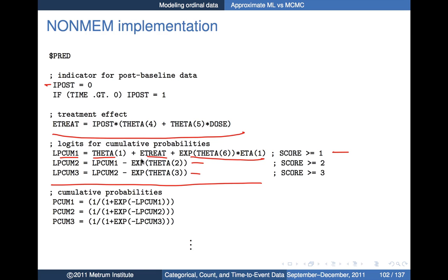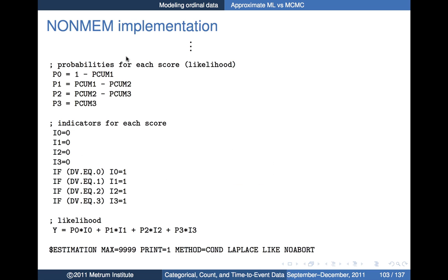The reason theta 2 and theta 3 are set up with exponentials is so they can take any value on the real line — by taking the exponent, you end up with something greater than or equal to zero, which is then subtracted to introduce the correct ordering on the intercept terms. Then it takes the anti-logit and converts cumulative probabilities back to probabilities for each score level, and finally pulls the likelihood together from that.